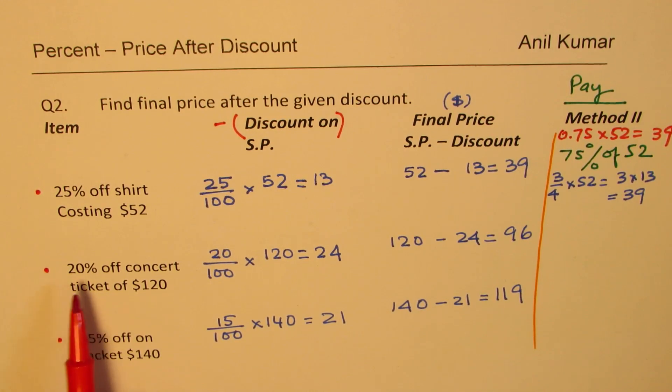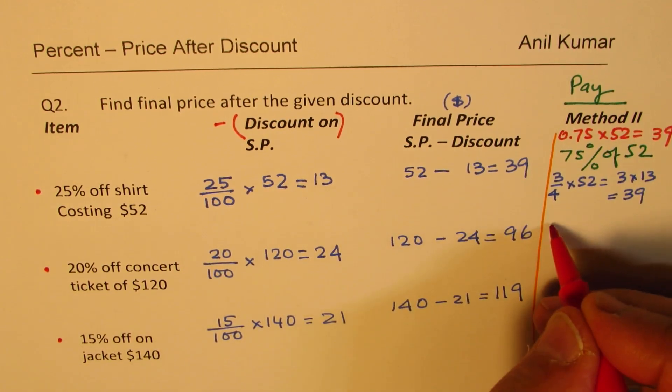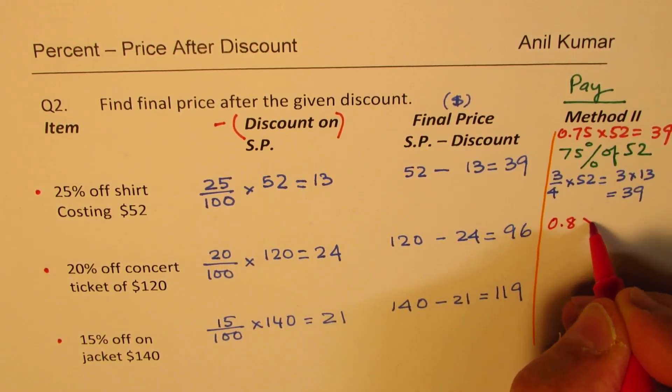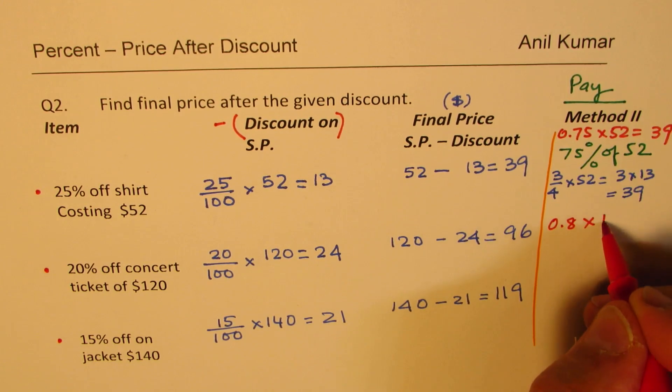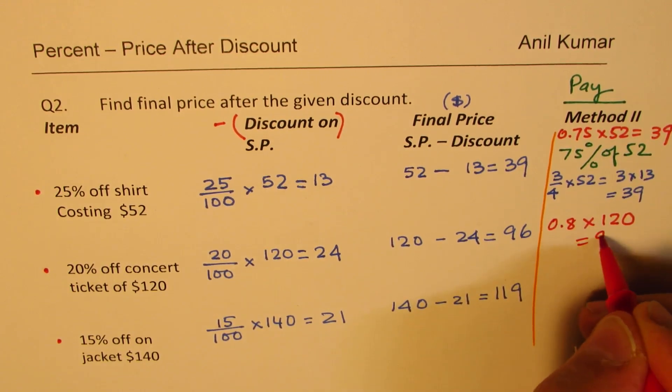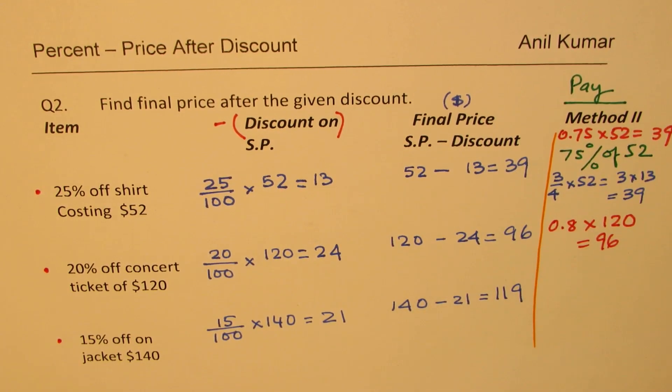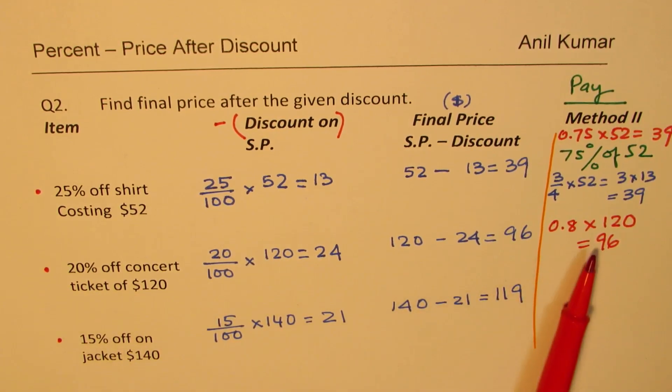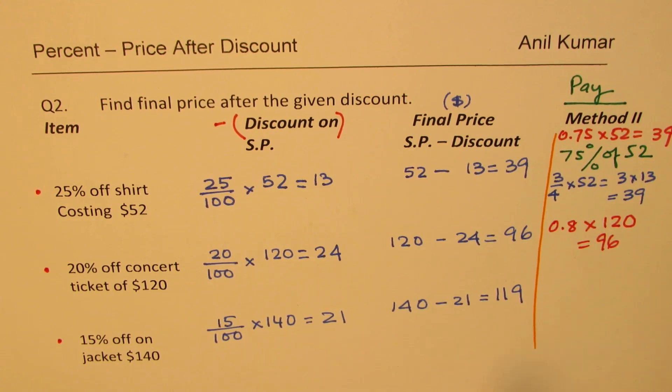So, here, when I say 20% off concert means you are paying how much? 80%. That means 0.8 times 120. Isn't that simple? This decimal goes away. 12 times 8 is 96. You get your answer. So, sometimes, it is kind of faster to work this way. I hope you are getting the idea. So, to begin with, it may be slightly tricky. But once you get used to or some practice, it will be very fast.